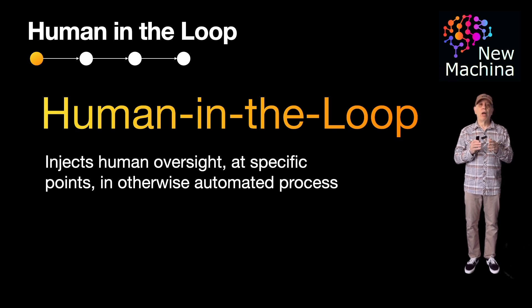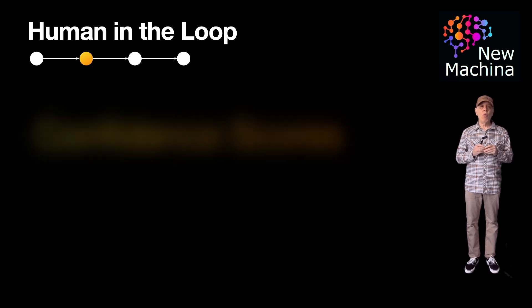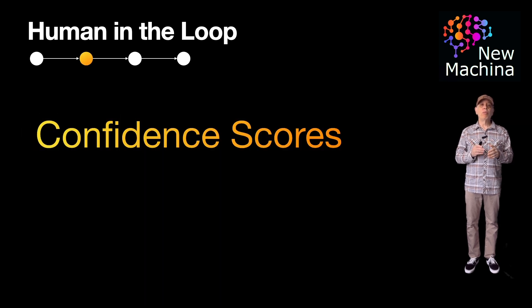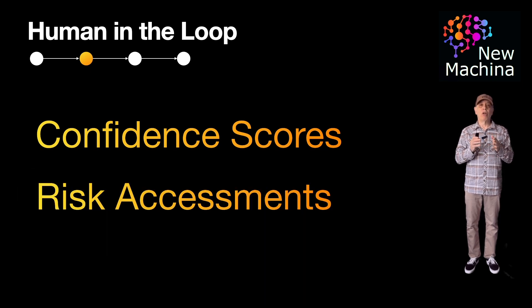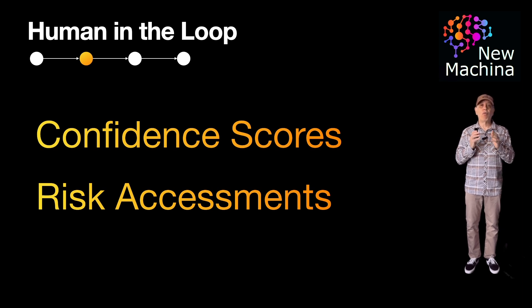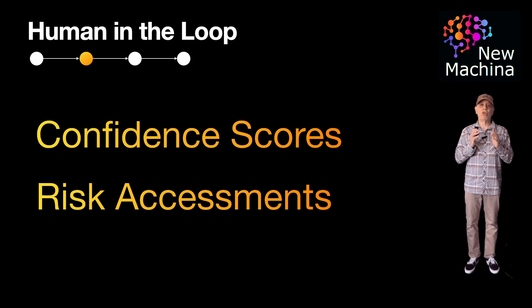So when should you loop the human in? Human-in-the-loop systems use thresholds, like low confidence scores or risk assessments, to trigger human review. Agents can escalate high-risk decisions such as financial transactions or medical diagnoses before acting. It's like saying, hey, I'm not 100% sure, so let me get a human to double-check before I move forward.